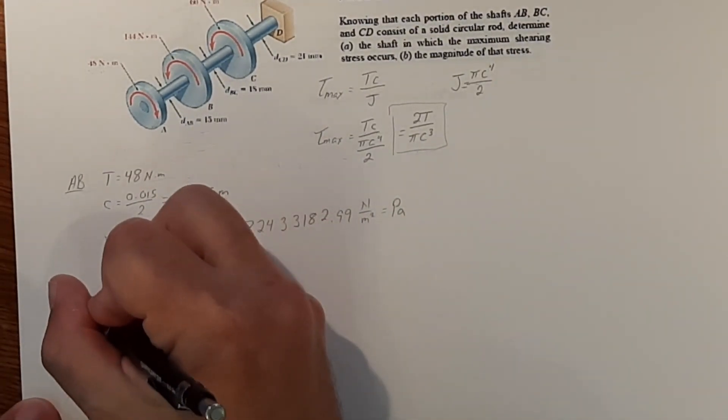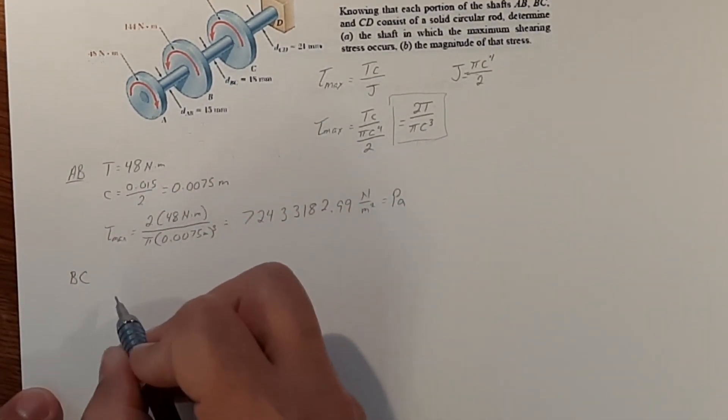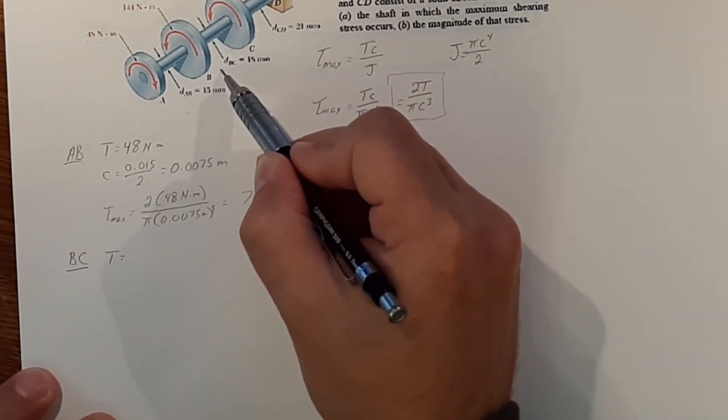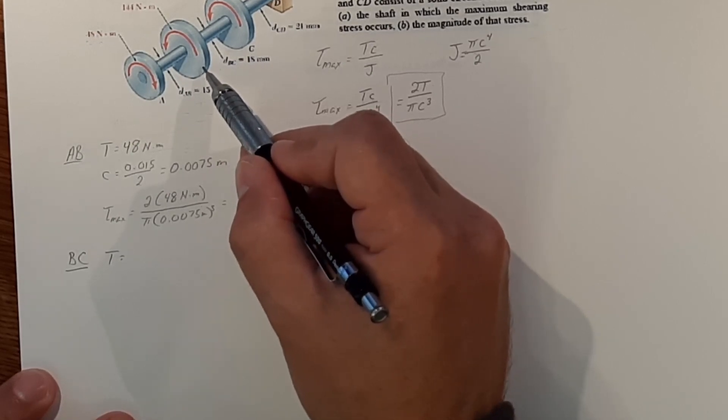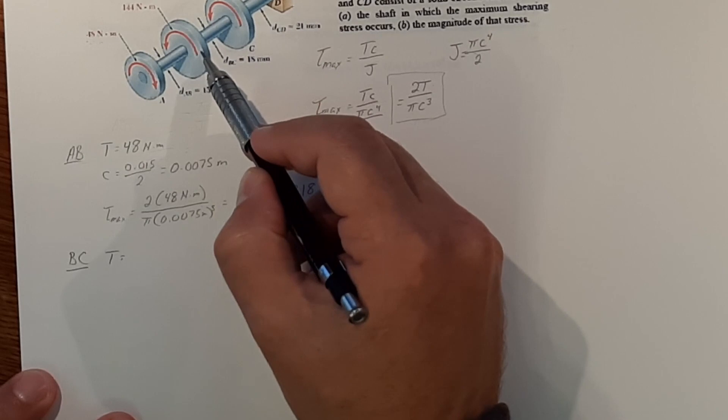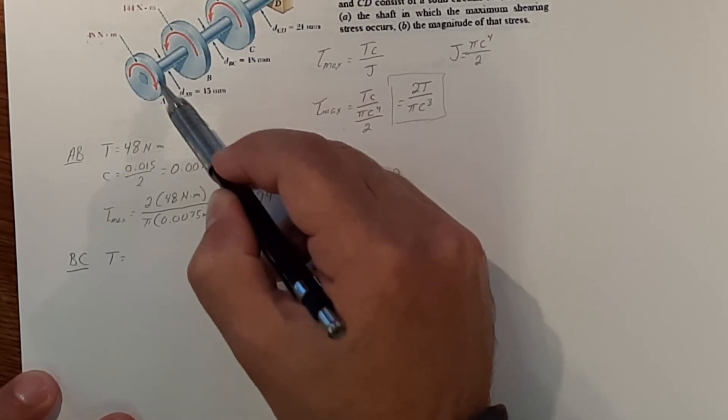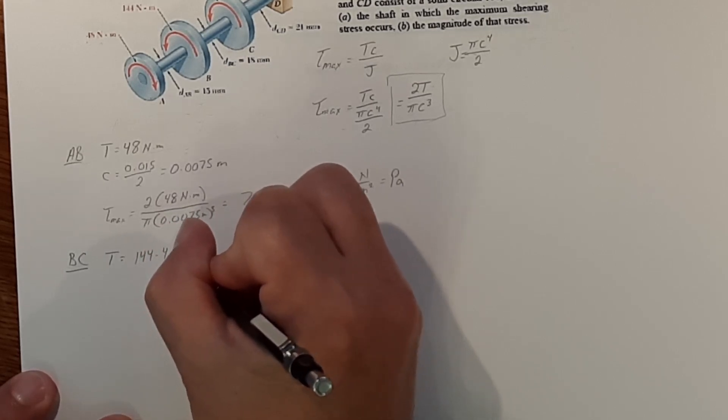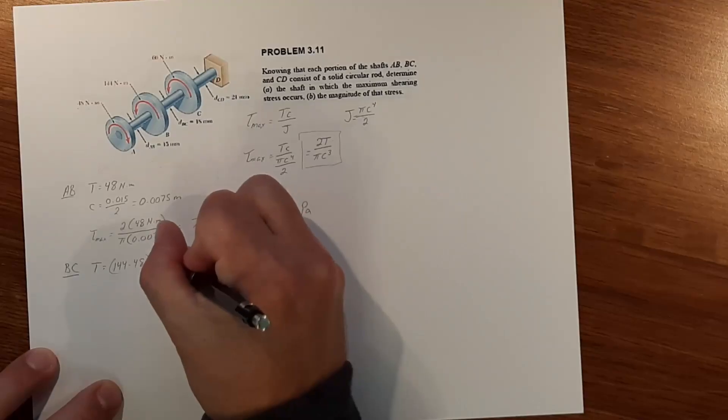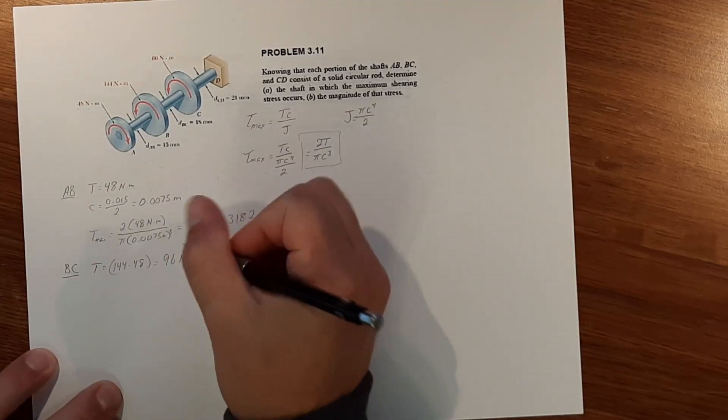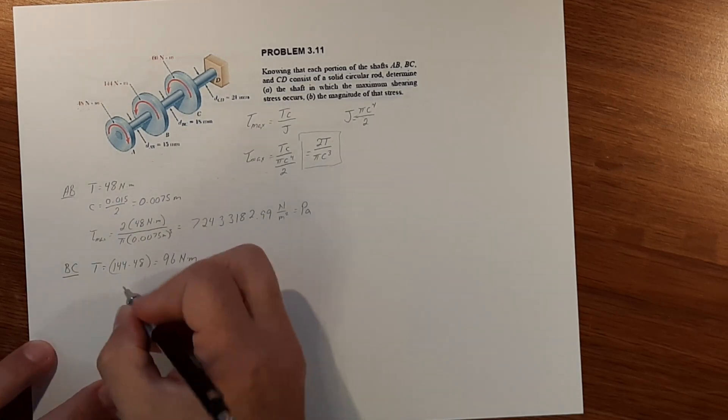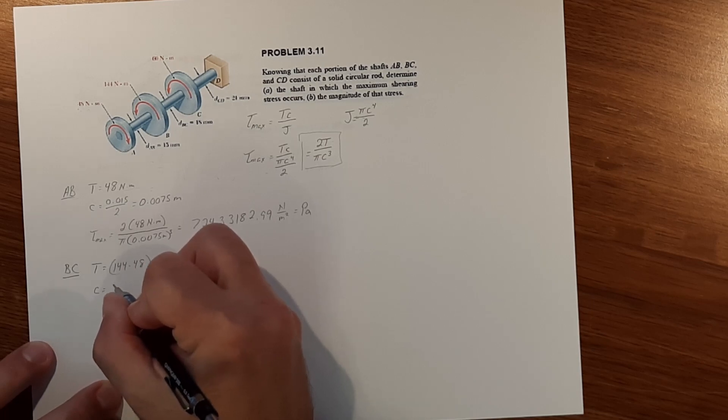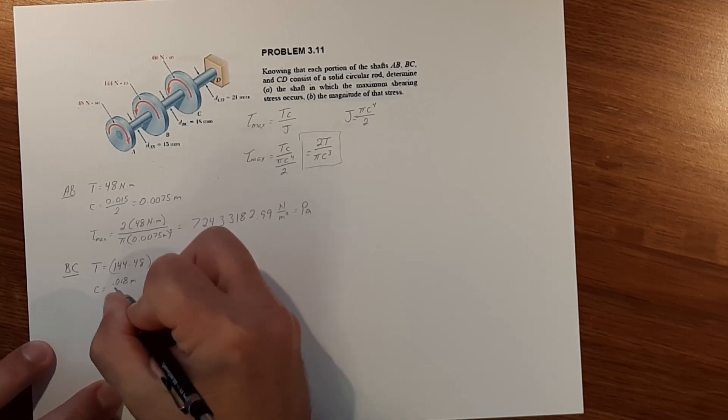For section BC the torque on BC is equal to 144 minus the 48 and that equals 96 newton meters. The C is 18 millimeters or 0.018 meters over 2 is 9 times 10 to the negative third meters.